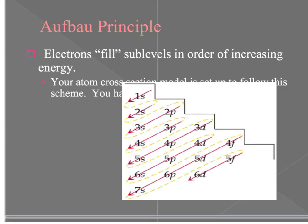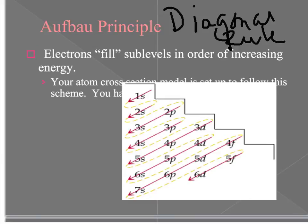The first rule you need to understand to build an orbital filling diagram is called the Aufbau principle, or the diagonal rule. This rule says that electrons fill sublevels in order of increasing energy following this diagram. People call it the diagonal rule because of how you follow the sublevels. Your atom cross-section model is actually set up to follow this scheme.